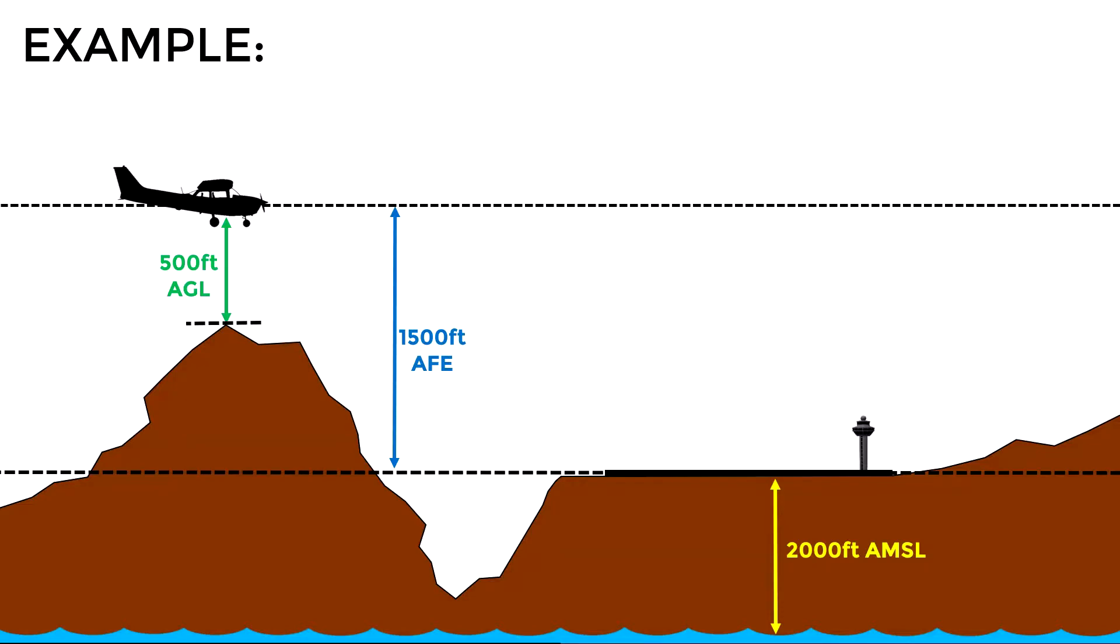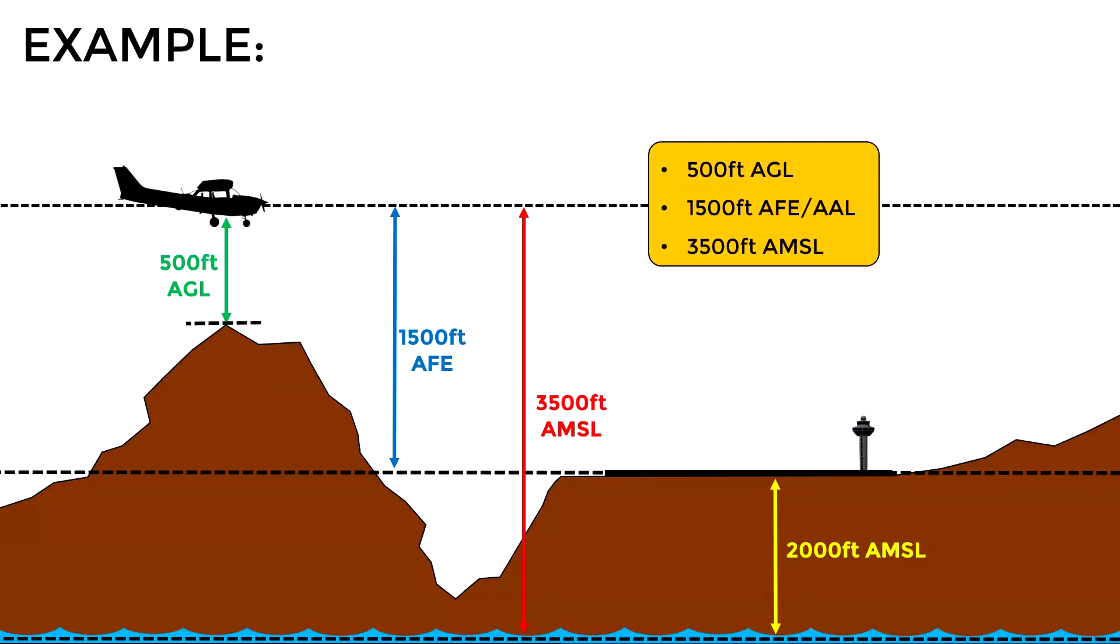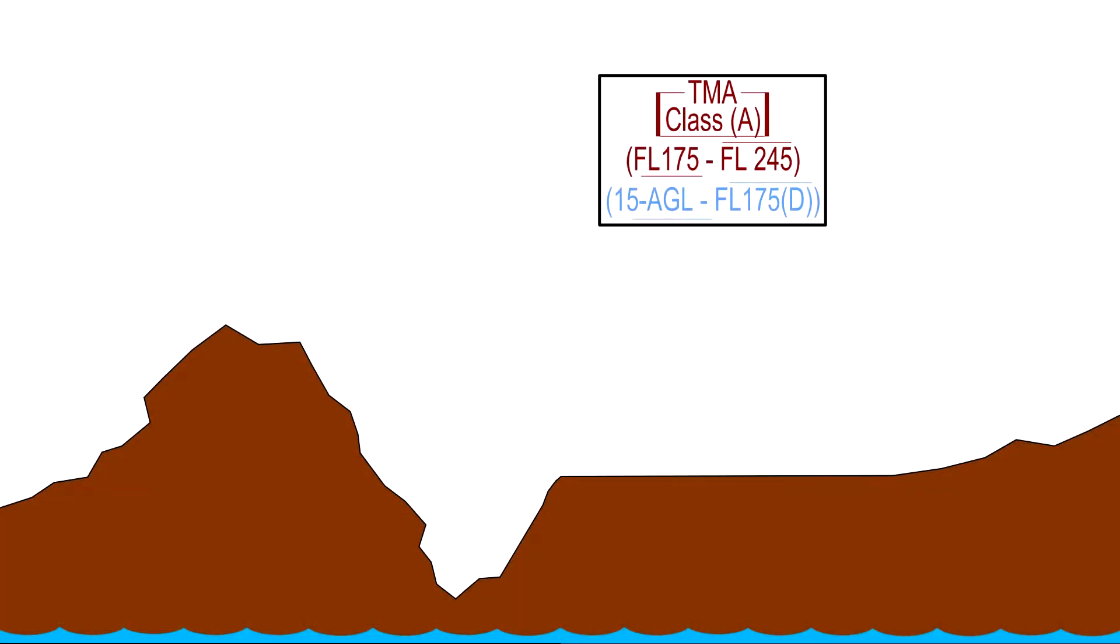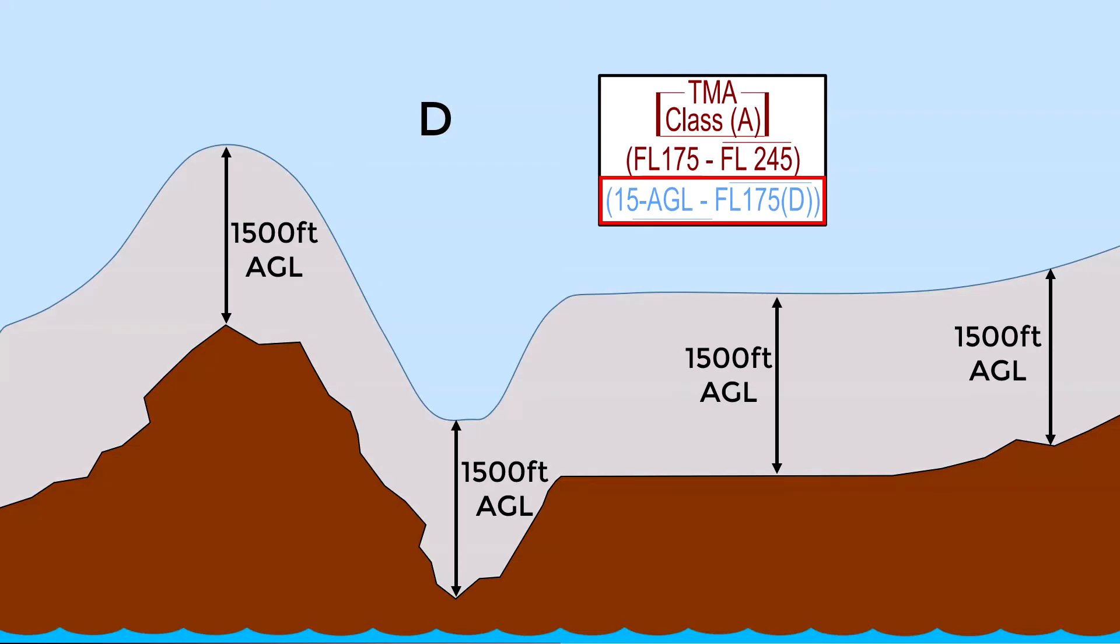Let's now see some practical examples of where we can find each of these terms. Let's begin with AGL. Here we have the vertical airspace classification of a terminal area or TMA. In the lower part we can see that the class delta airspace starts above 1500 feet AGL. In this case the lower limit of the class delta airspace depends on the irregularities of the terrain since it is expressed in terms of AGL.